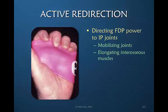Another example is making a blocking splint to hold the metacarpophalangeal joints in extension. We are redirecting all of the power to the flexor digitorum profundus — the interosseous muscles cannot actively flex the MP joint in this posture. The power of the FDP mobilizes the joints and elongates the interosseous muscles, and it also elongates the lumbrical muscles as well.